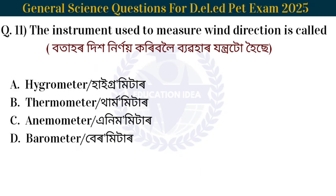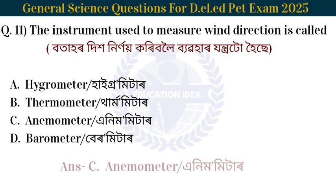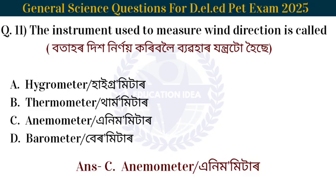Next question: The instrument used to measure wind direction is called? The instrument used to measure wind direction is an anemometer.